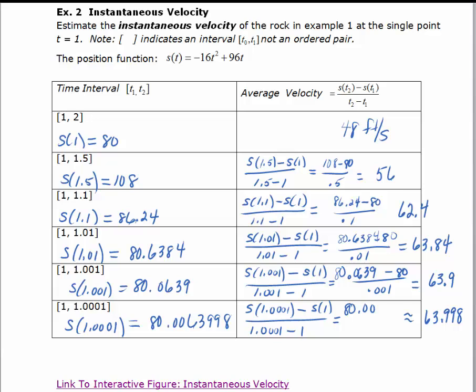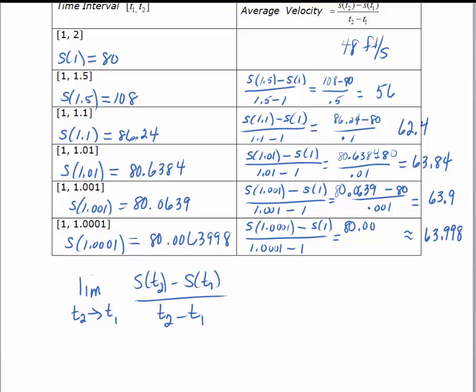This is the first idea. What we just did was we let T sub 2 approach T sub 1. As we let T sub 2 approach T sub 1, in other words that incremental change is getting smaller and smaller, we can see that the average velocity is approaching 64 feet per second.